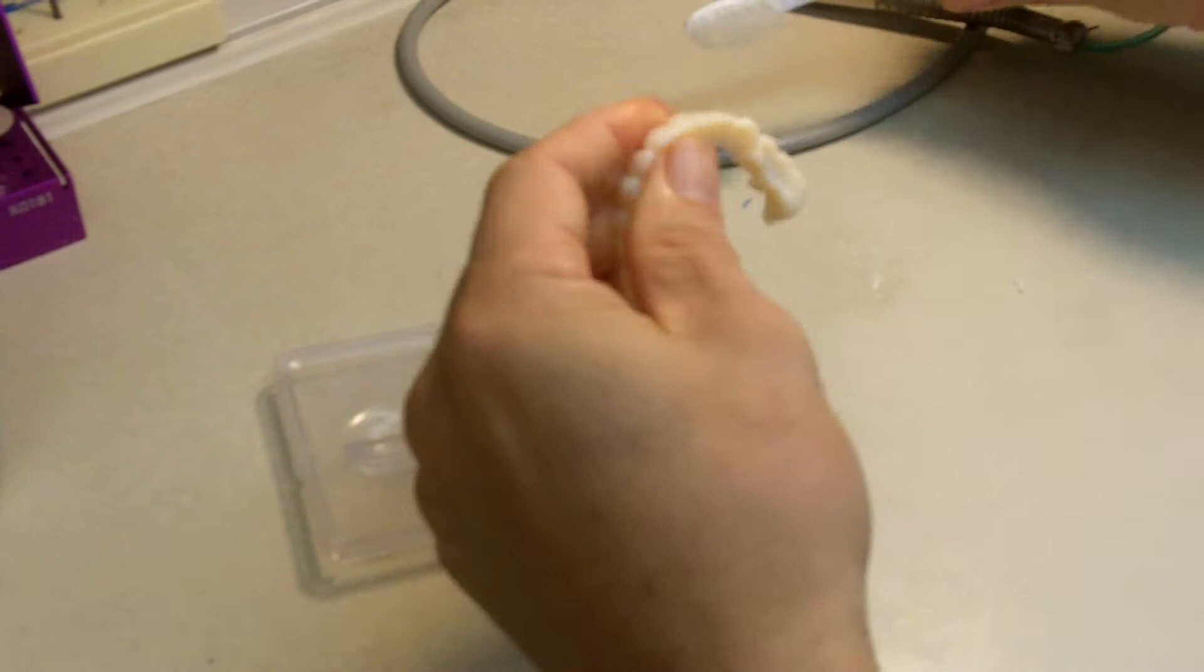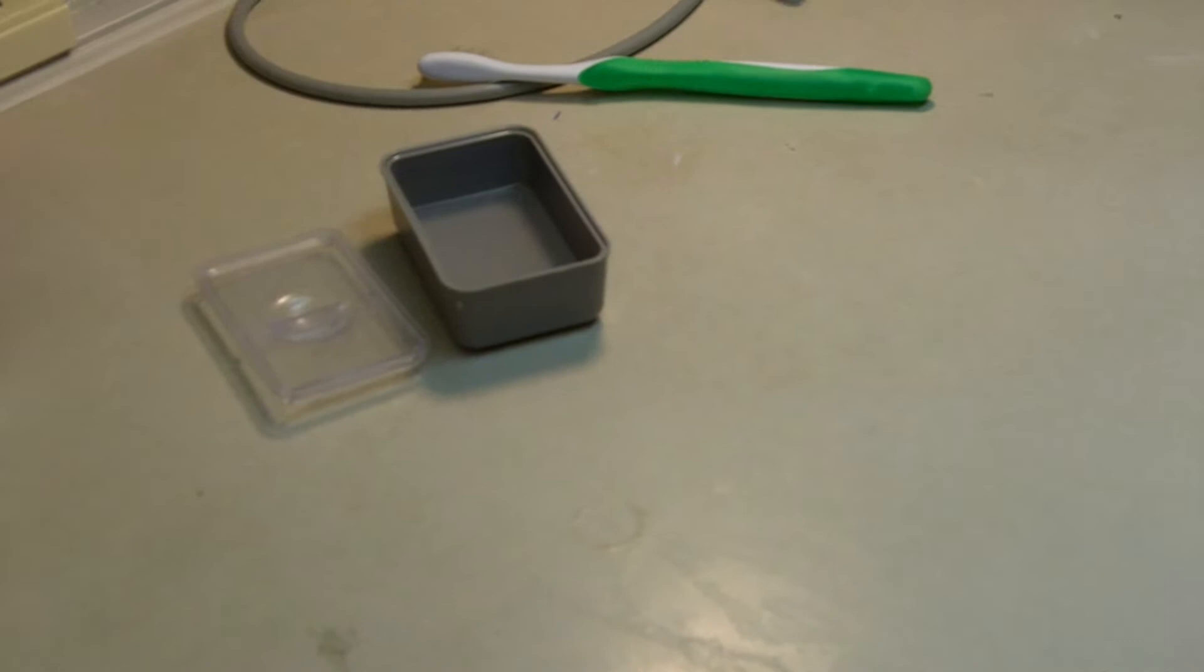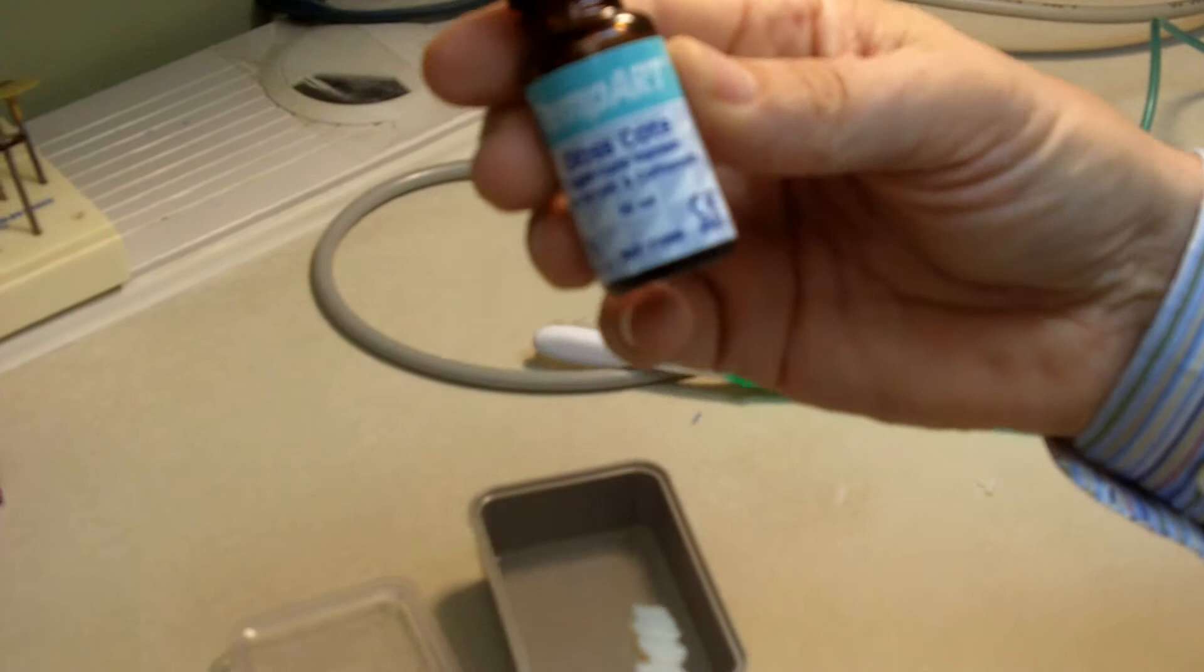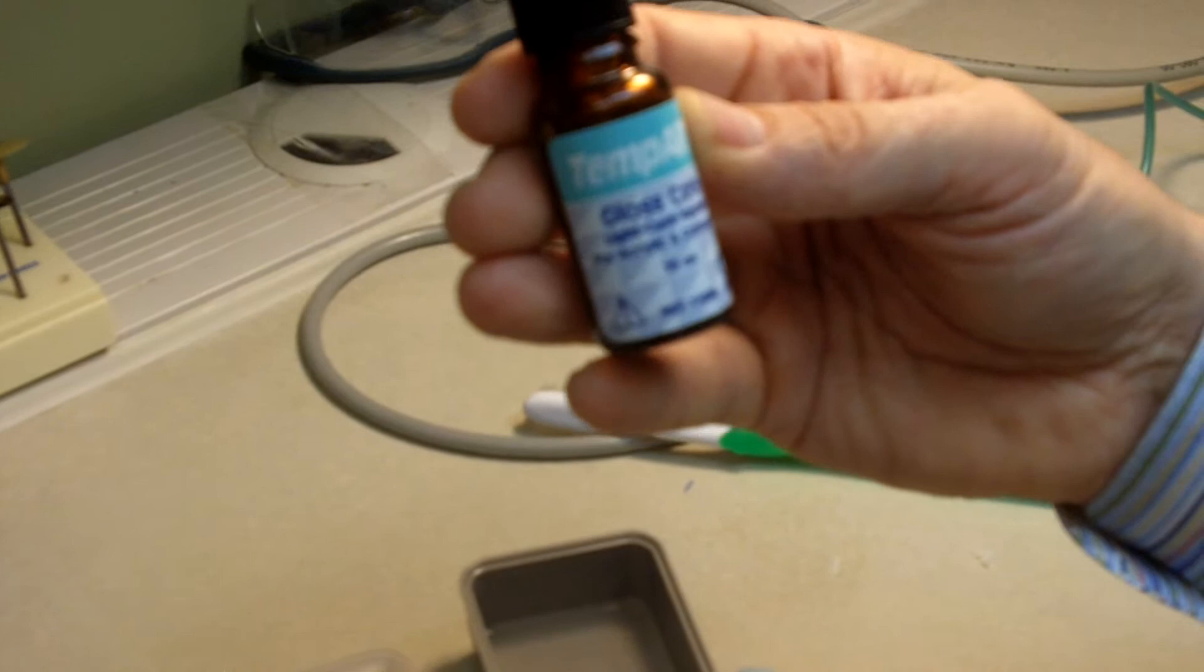And then I'm going to use Gloss Coat by TempArt. This is made by the people who make HydroCast denture material, so it's called Gloss Coat. This is a great adhesive to use.